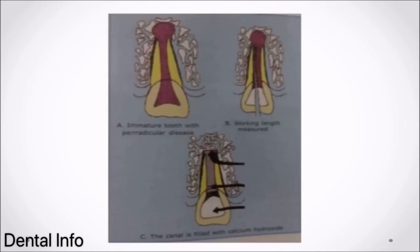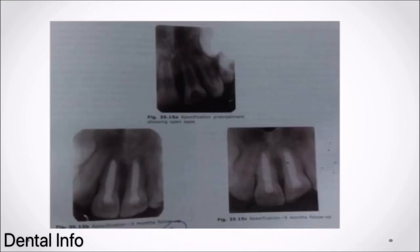Figures A, B, C: A — Immature tooth with periradicular disease. B — Working length measured. C — Canal filled with calcium hydroxide. Additional figures show: A — Apexification pre-treatment showing open apex. B — Apexification 3-month follow-up. C — Apexification 9-month follow-up.